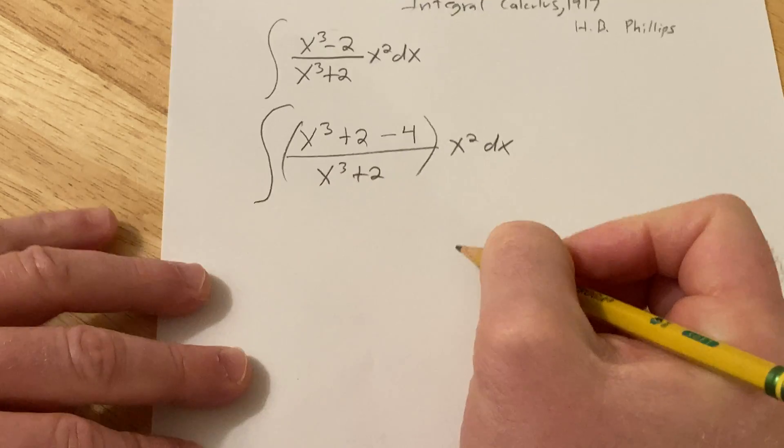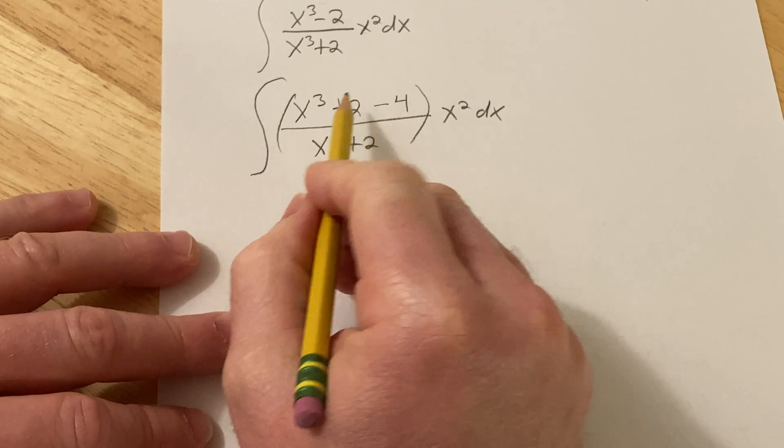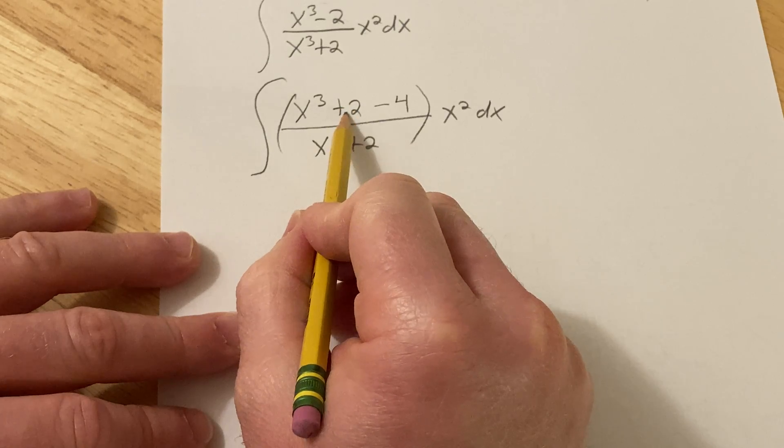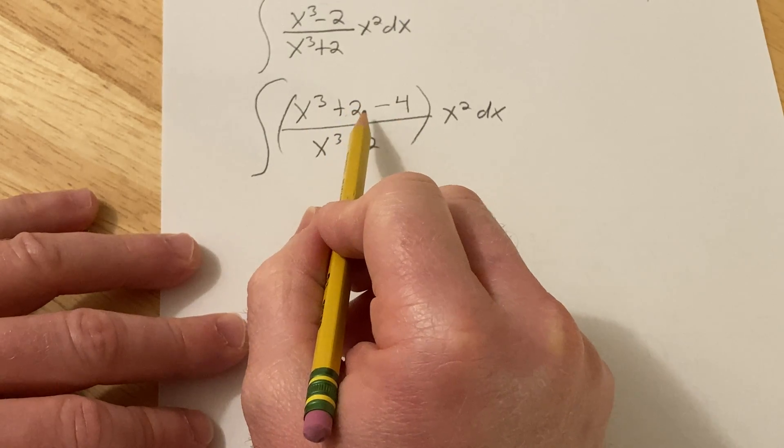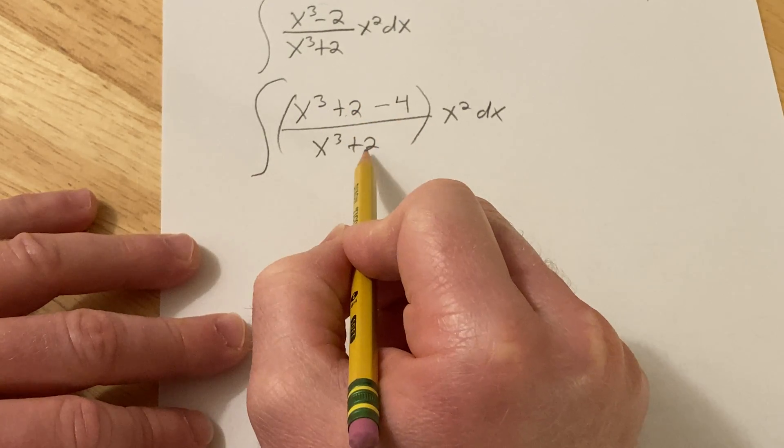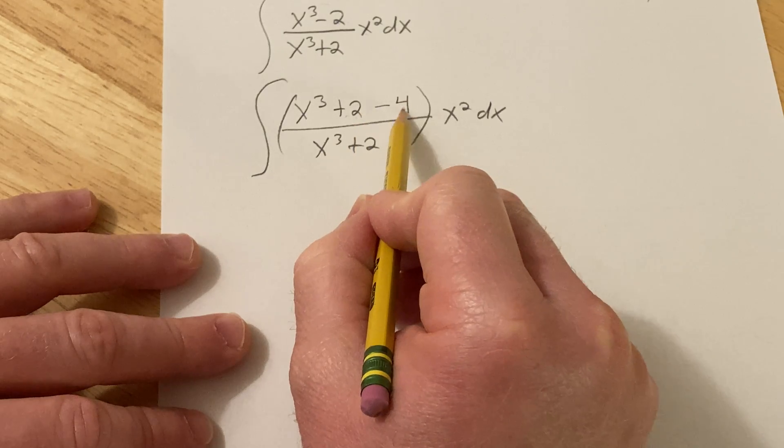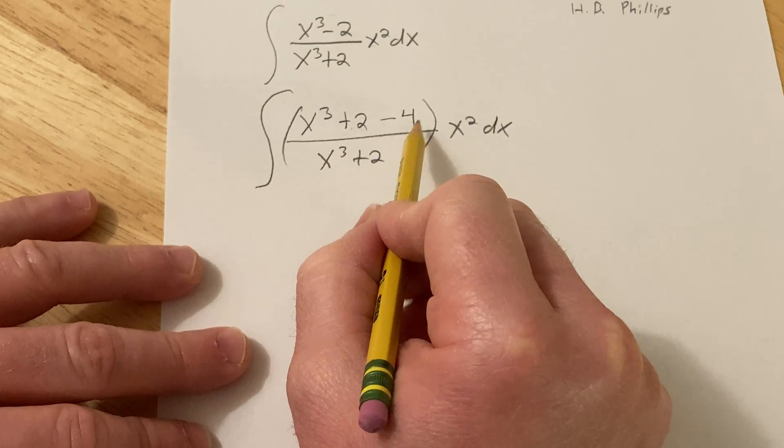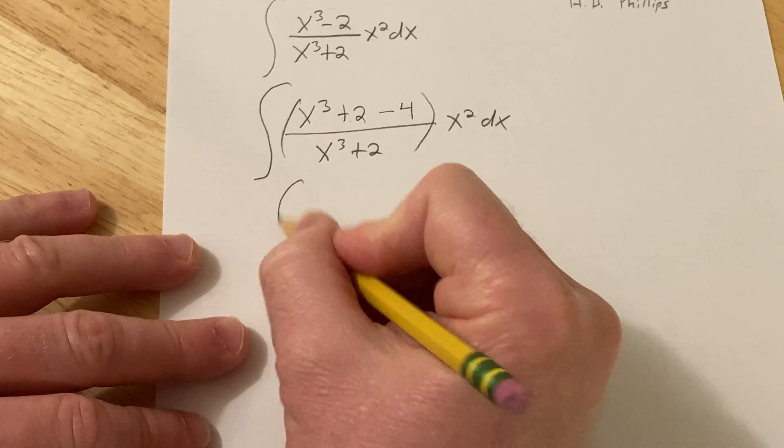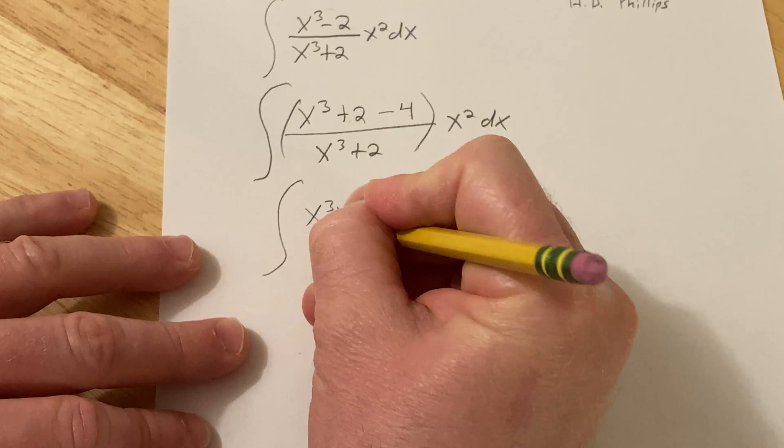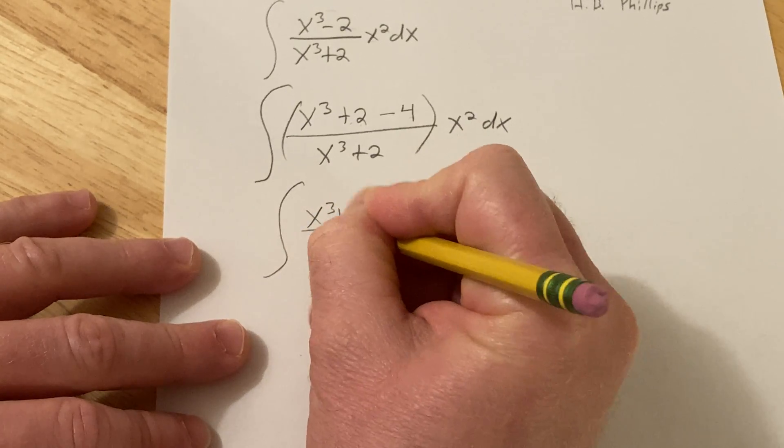And so basically what this does is it allows us to break it up. So you saw how I put the 2 there and then I put the minus 4. So basically I want it to be a 2 so these cancel and then to fix it you have to subtract 4 because 2 minus 4 is minus 2. So now you can write this as x cubed plus 2 over x cubed plus 2.